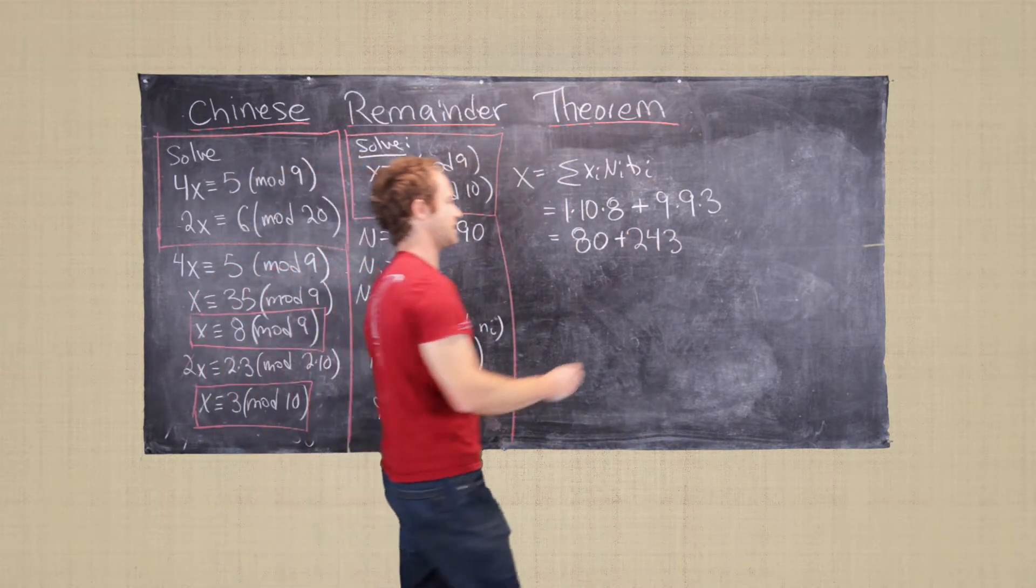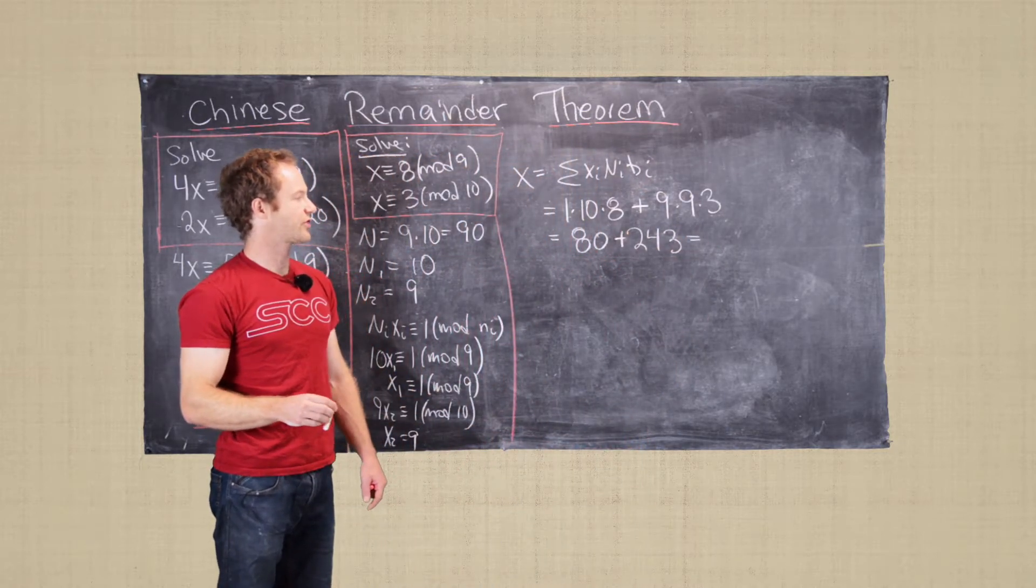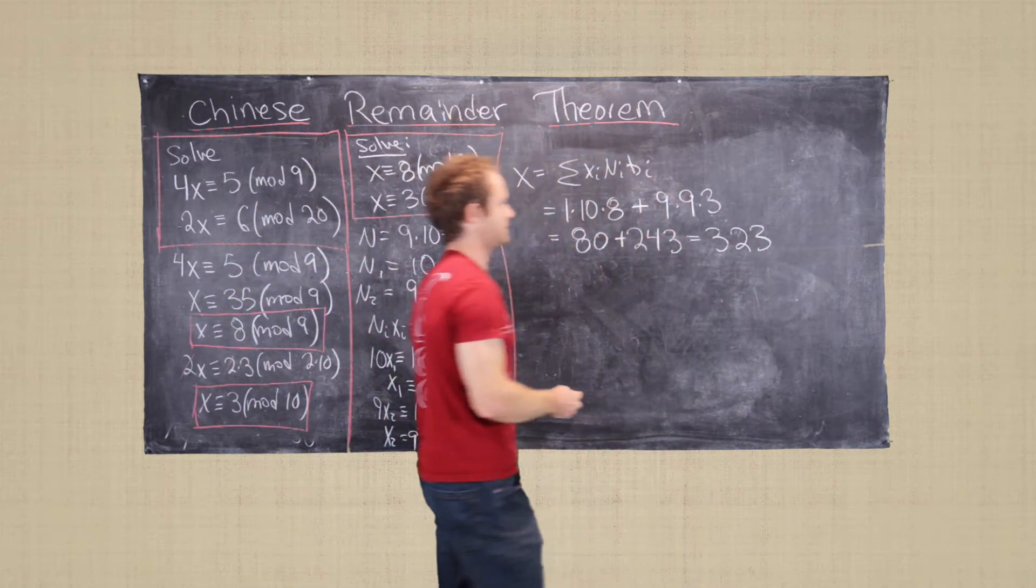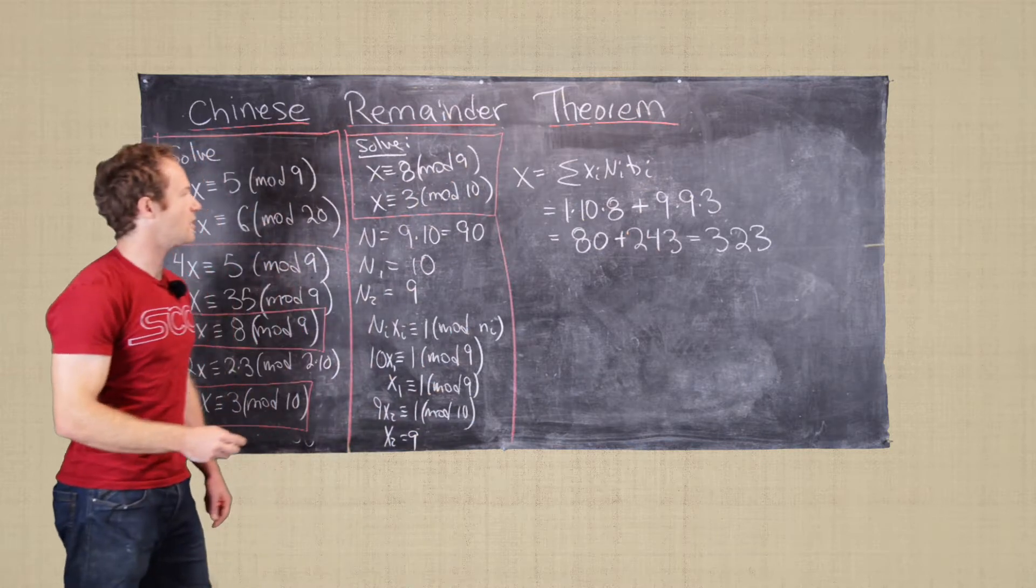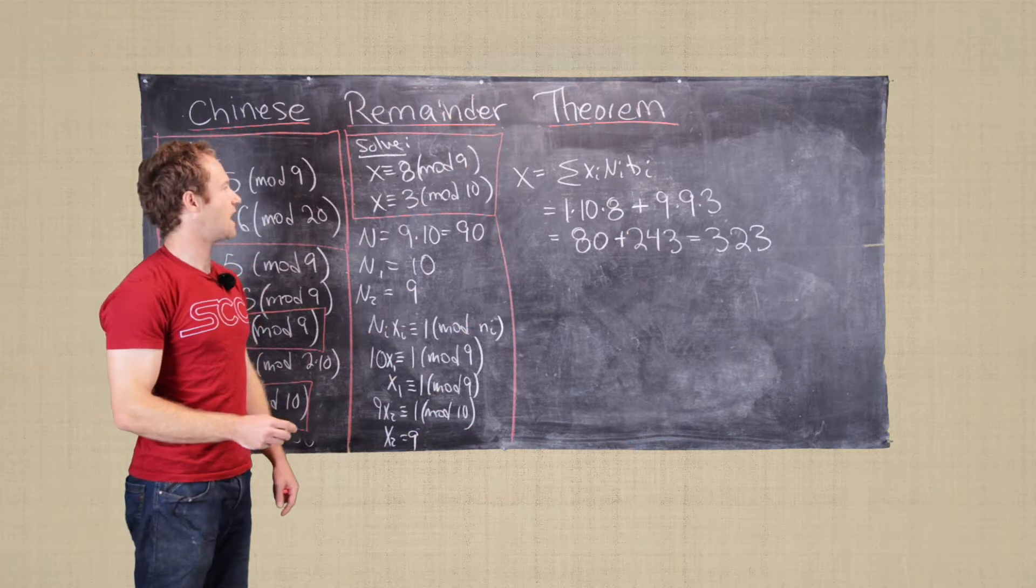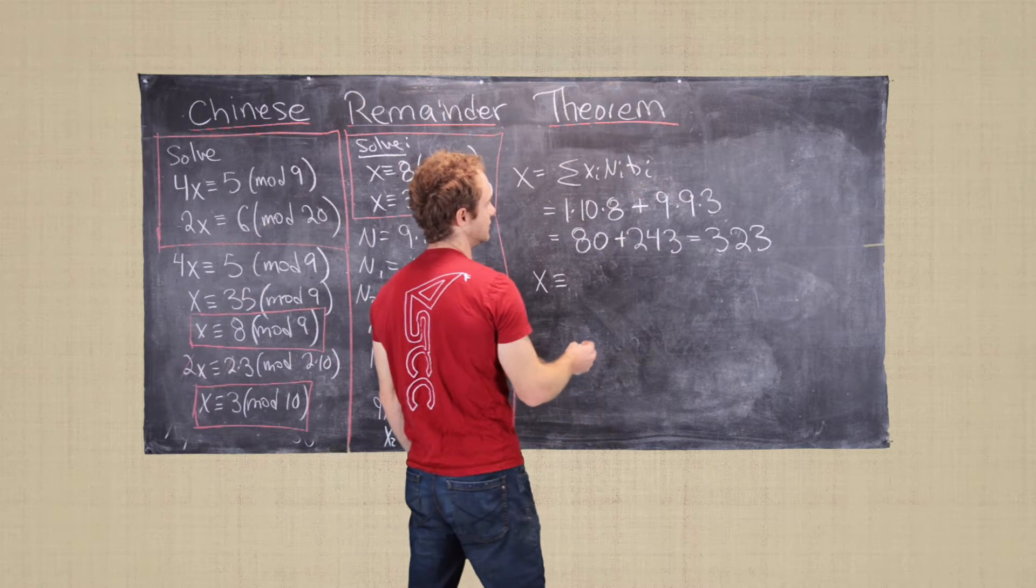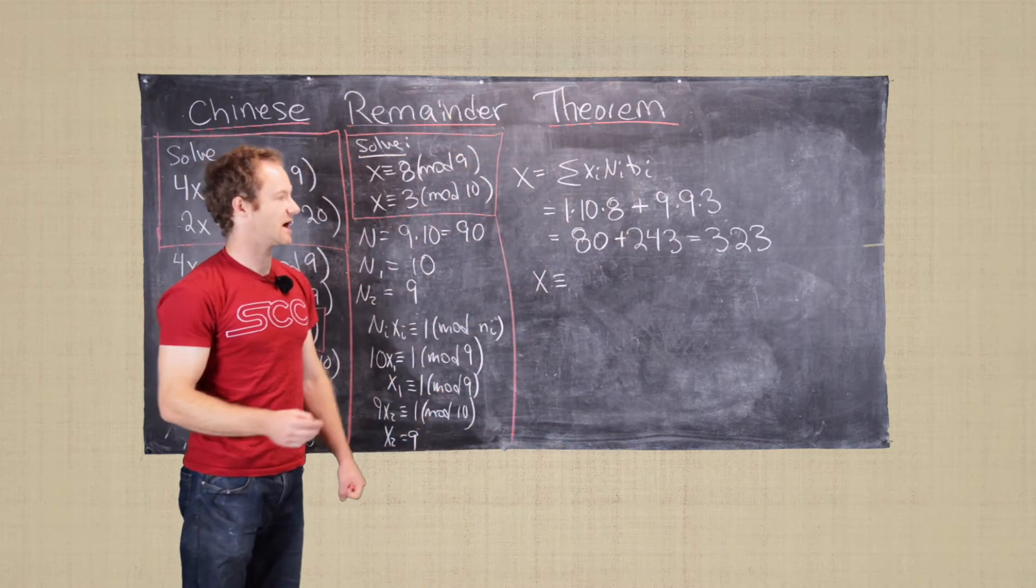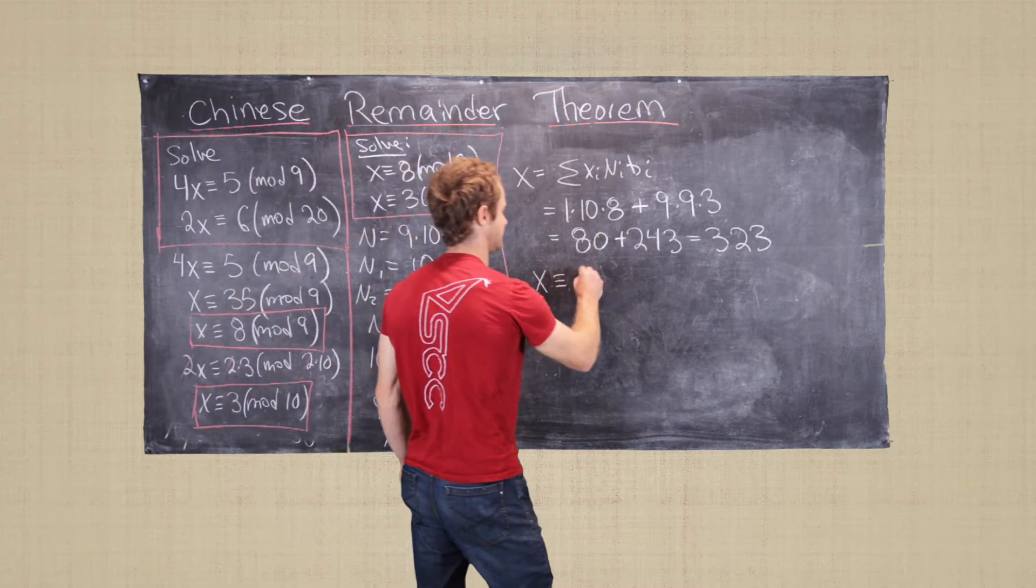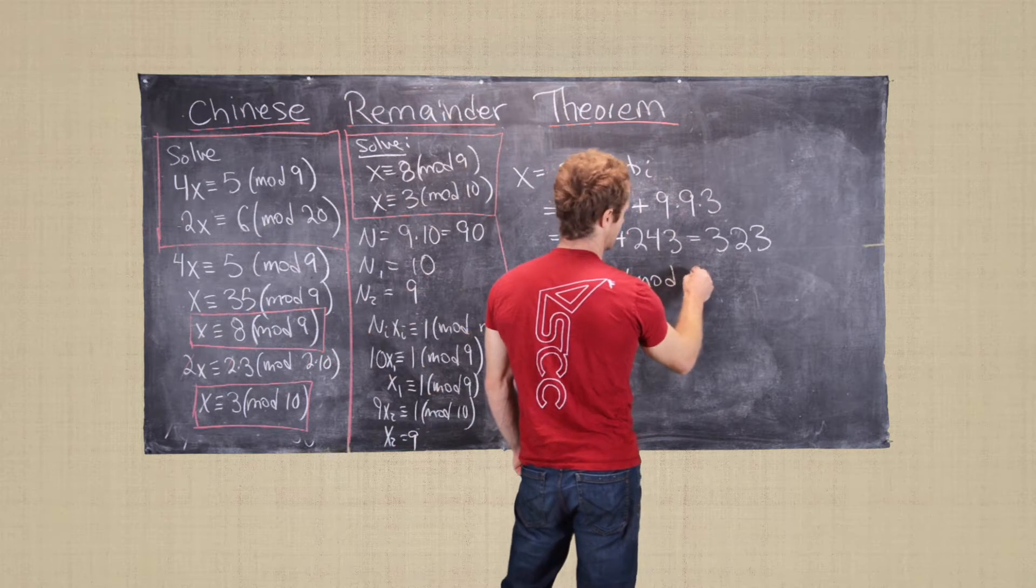So that tells us that x is equal to 323. But now we know by the Chinese remainder theorem that this should be unique modulo 90. So that means x is congruent to, so we need to reduce this mod 90. So 270 will be the closest. So that's 53, 53 mod 90.